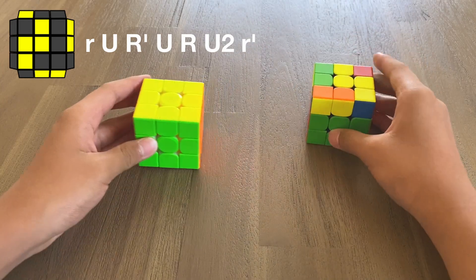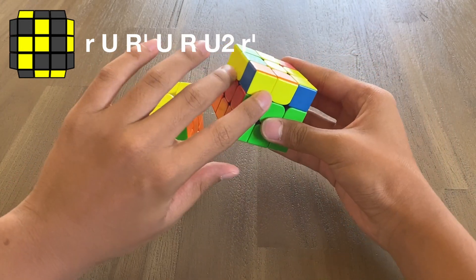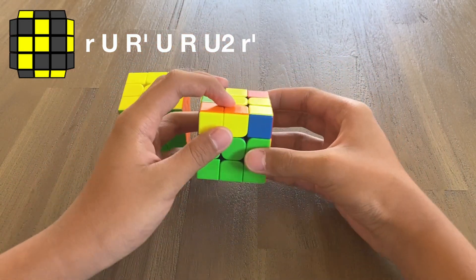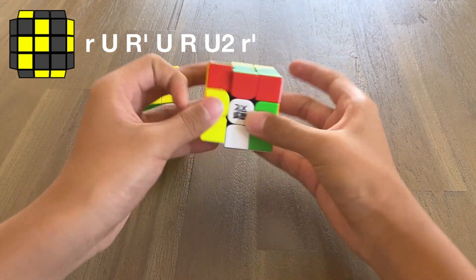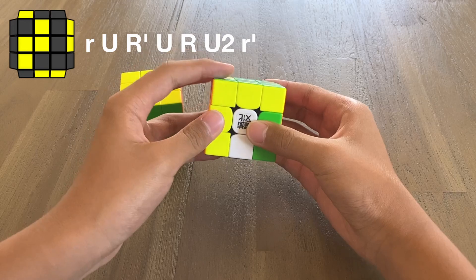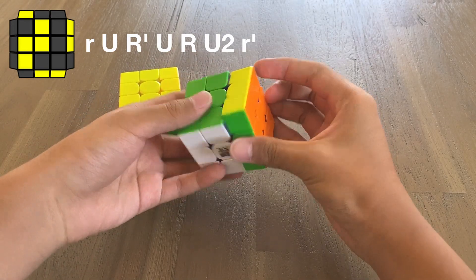This is similar to if you would do it on the left side, but it's simply mirrored. So something like this. A lefty sune. Again, middle finger, double flick, and down.